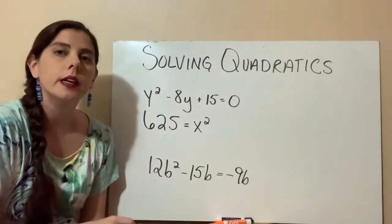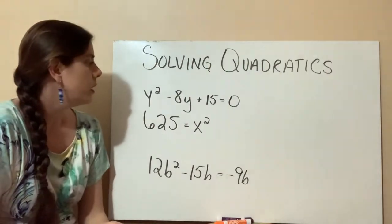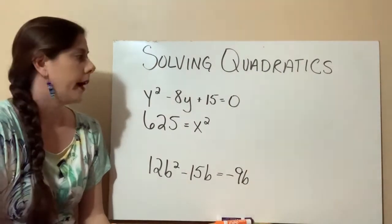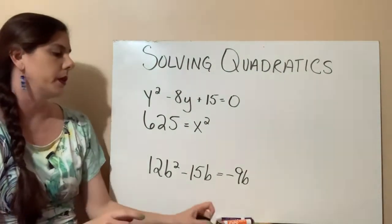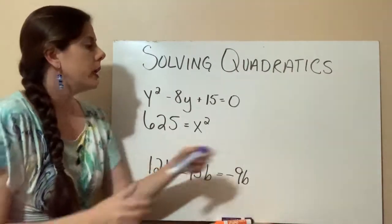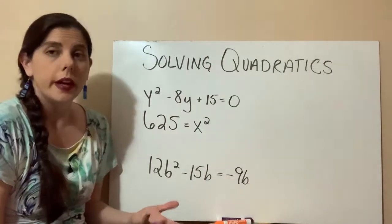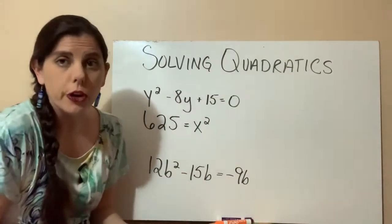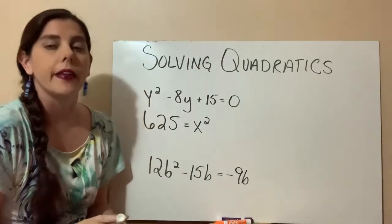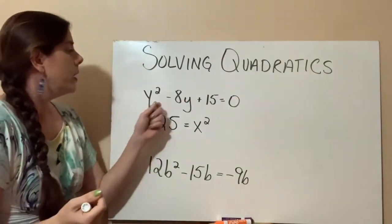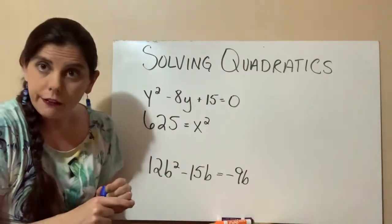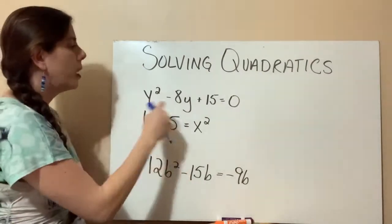So with our first one, y squared minus 8y plus 15 equals zero. The first thing that we need to do on this first equation is factor it, because it's a lot easier to solve for the variable when it's factored. And that's what we've established in the last video. So since we're experts at factoring now, this should not be a problem.